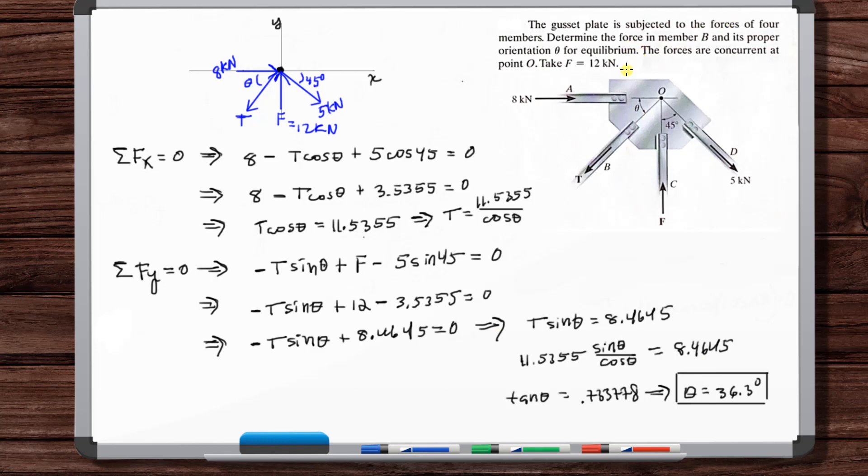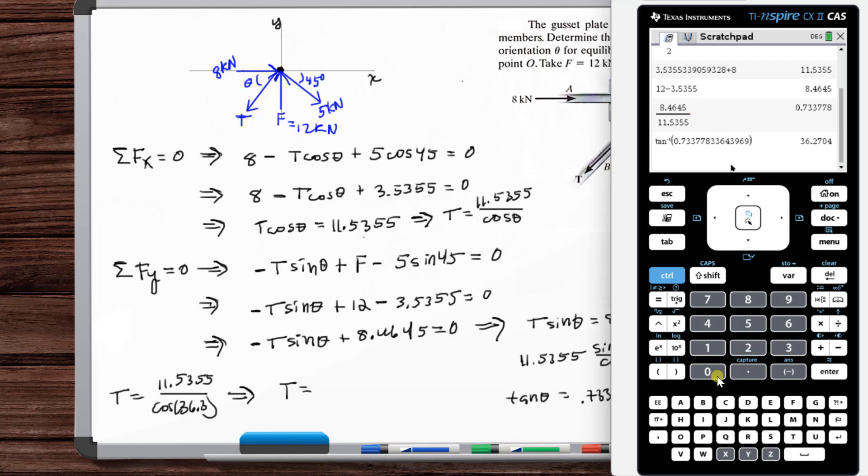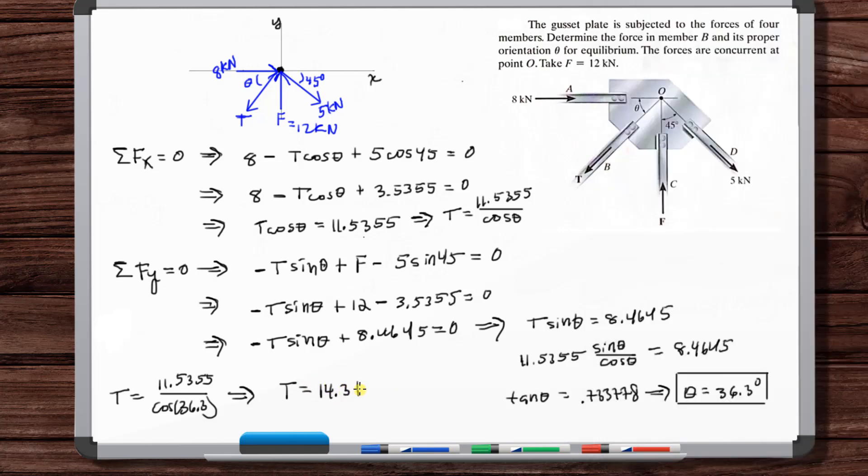Okay, but it also wants this force T, so let's just plug theta in here. So we get T is equal to 11.5355 over cosine of 36.3, so T is equal to 14.3 kilonewtons. And that's your final answers.